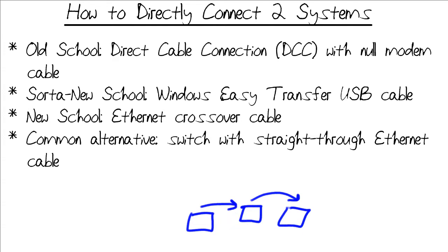Let's do a little bit of history, because there is some fascinating history on how we accomplish this direct connection. At least as far as Windows is concerned, the old-school way was a technology built into earlier versions of Windows — Windows 95 in particular — called Direct Cable Connection, or DCC. You used what's called a Null Modem Cable to create a direct connection between those systems.